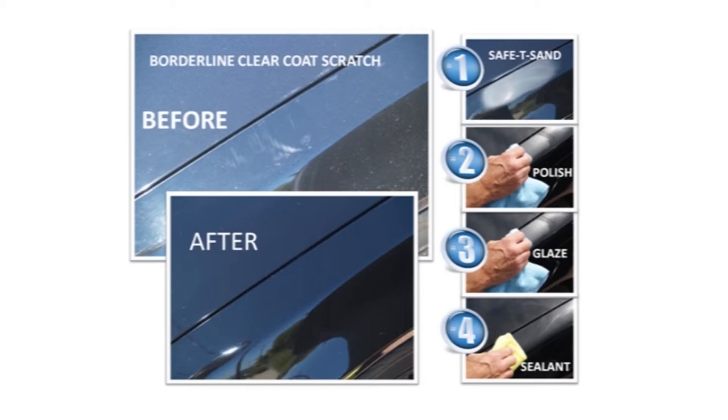Step number two, we're polishing out the burnish that was left there from the safety sand. Step number three, we're applying the glaze to bring out the depth and the clarity of the paint and remove any super micro-marring that's left in the polish and the microfiber towel itself. And then, again, step four, applying the sealant to the newly refinished paint. And you can see here the before and after. It's really dramatic.